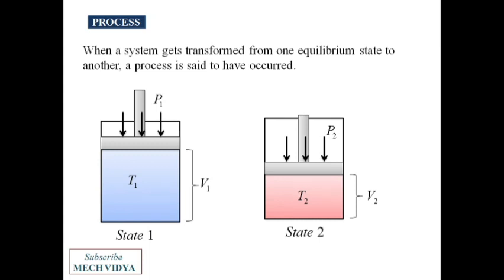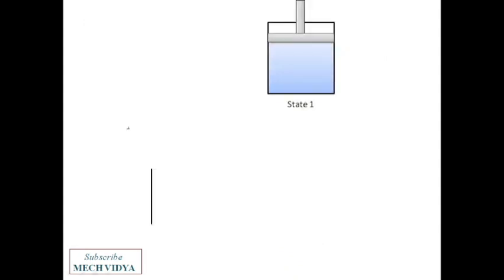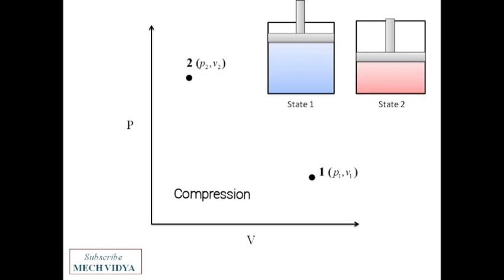If I plot this process in a pressure versus volume plot, I will get this: at state one, the system has a pressure p1 and volume v1. Now after expansion, the pressure becomes p2 and volume becomes v2. So properties—that is pressure, volume, temperature, etc.—are actually coordinates that help to determine the state of a system.